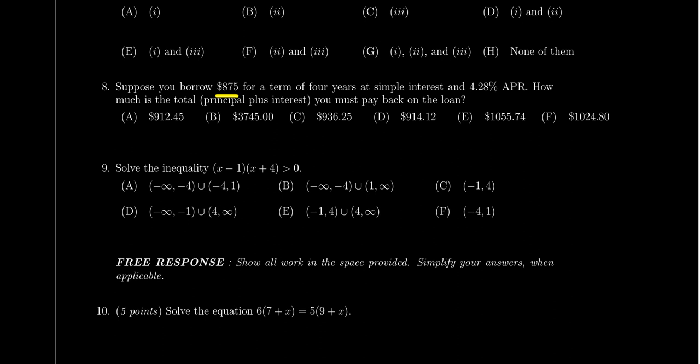$875 is borrowed by you for four years at a rate of 4.28% APR, or annual percentage rate. So how much is due back at the end of the four years?